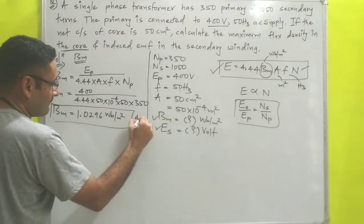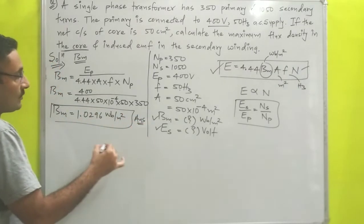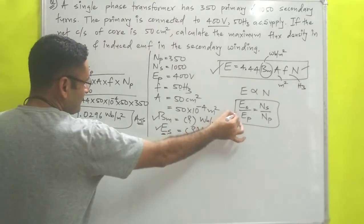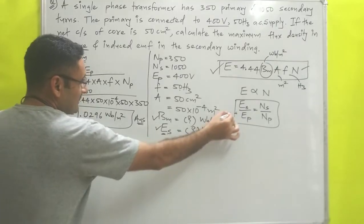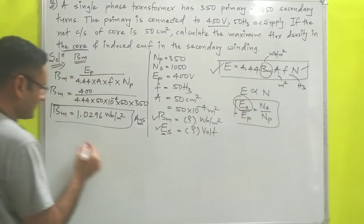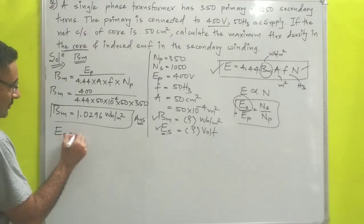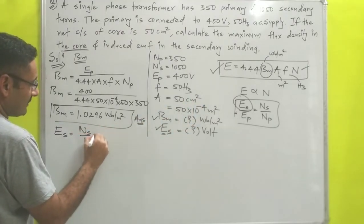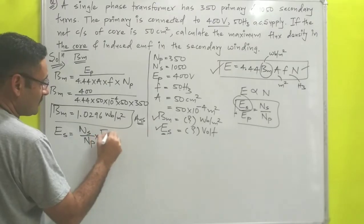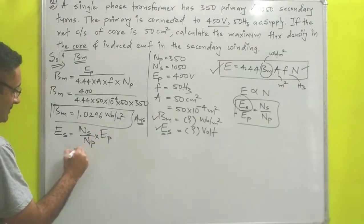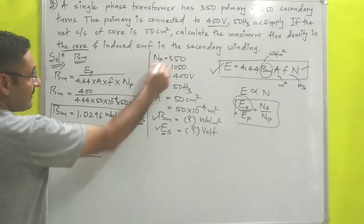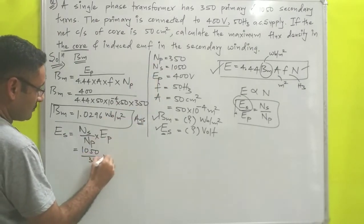Now similarly we have to find out the potential in secondary coil or EMF in secondary coil. For that purpose I will use this equation. I will make Es as subject. So Es = (Ns/Np) × Ep, which equals (1050/350) × 400.